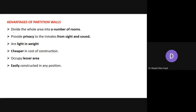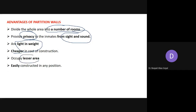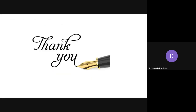To summarize, all partition walls divide a whole area into a number of rooms, providing more rooms in a given space. They provide privacy from both sight and sound. They are generally lighter in weight and cheaper than solid walls, occupy less area leaving more floor space available, and are easy to construct in any position. Depending on the situation, you can adopt a particular type of partition to obtain the advantages you need. Thank you very much.